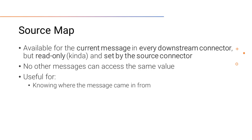The next map we'll discuss in detail is the source map. Much like the channel map, it can be accessed through the whole workflow of the channel. However, the source map is read-only mostly — I'll explain this later. This is because the source connector injects values into the source map when it receives the message. This is useful for knowing where the message came from, so you can use those variables to filter or process a message.